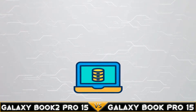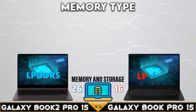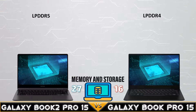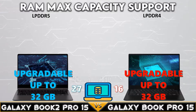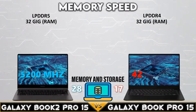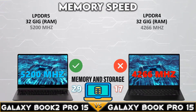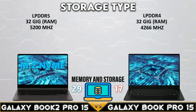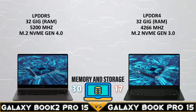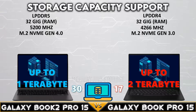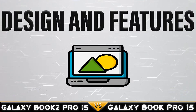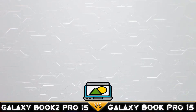Now let's move into the memory and storage comparison. The Book 2 Pro 15 2022 supports the newest LPDDR5 memory, and both laptops support 32 GB of memory. The Book 2 Pro 15 2022 supports 5200 MHz memory speed with M.2 NVMe Gen 4.0 storage, while the Galaxy Book Pro 15 2021 has a higher storage capacity.